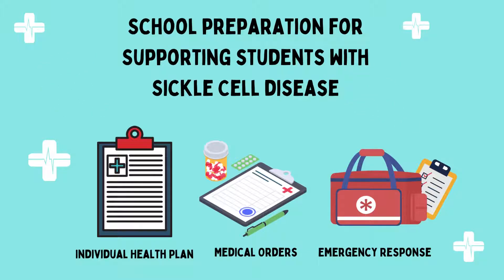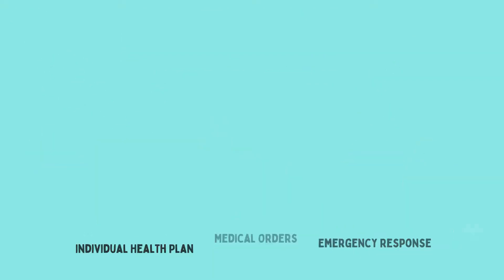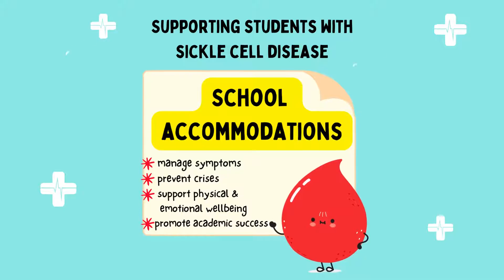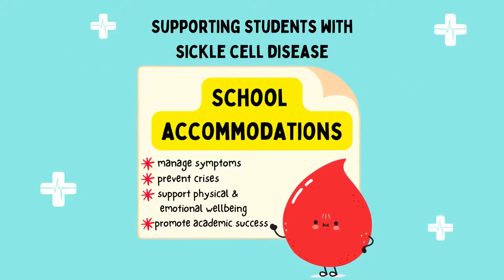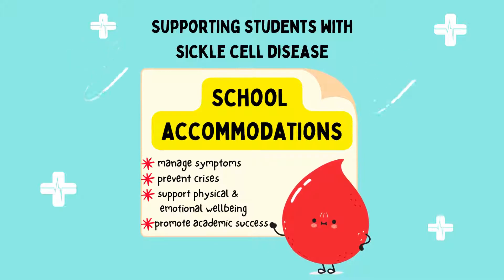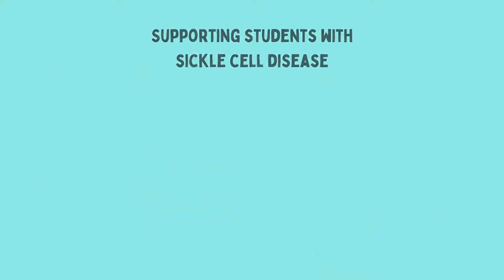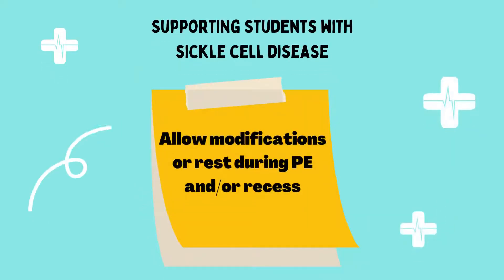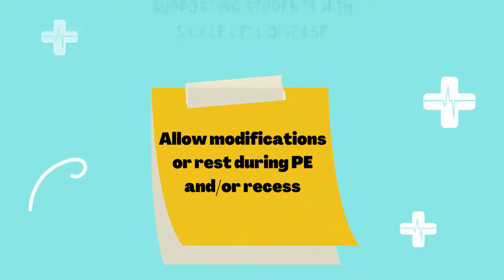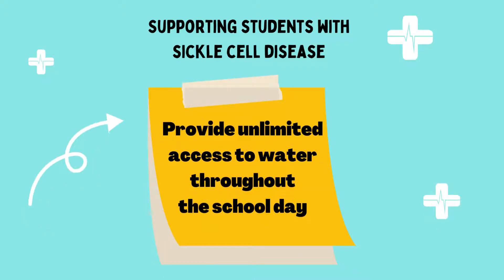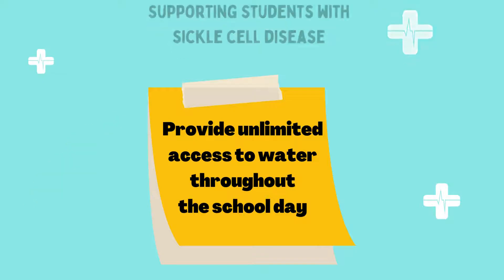In addition to schools being prepared with individualized health plans, specific medical orders, and acute emergency response, students with sickle cell disease should be provided appropriate accommodations to help manage their symptoms, prevent crisis from occurring, and best support their physical and emotional well-being as well as academic success. Typical accommodations can include pacing exercise and allowing modifications or rest during PE and recess, and providing unlimited access to water throughout the school day to remain hydrated.